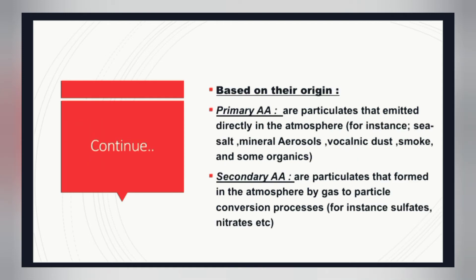Classification can also be based on their origin — whether they are primary or secondary. In primary atmospheric aerosols, particulates are emitted directly into the atmosphere. Examples include sea salt, mineral aerosols, volcanic dust, smoke, and some organics. In secondary atmospheric aerosols, particulates are formed in the atmosphere through gas-to-particle conversion processes.